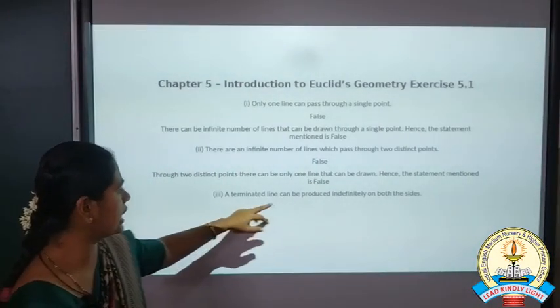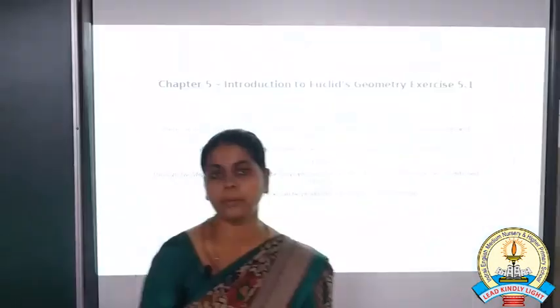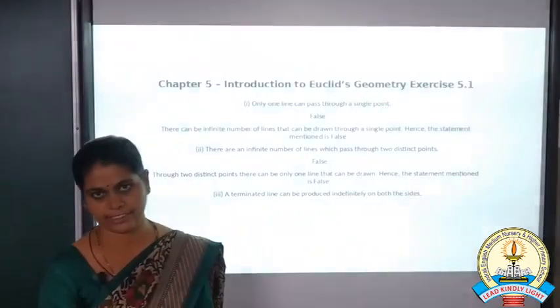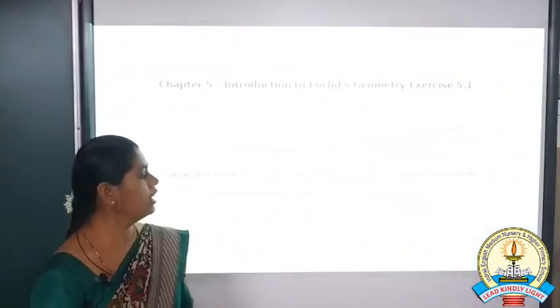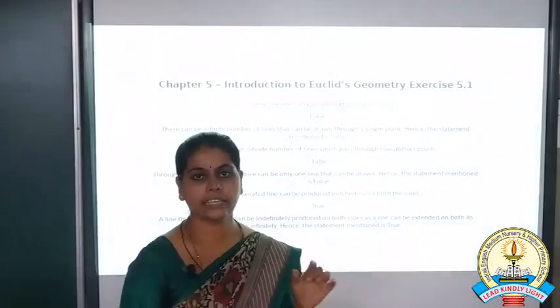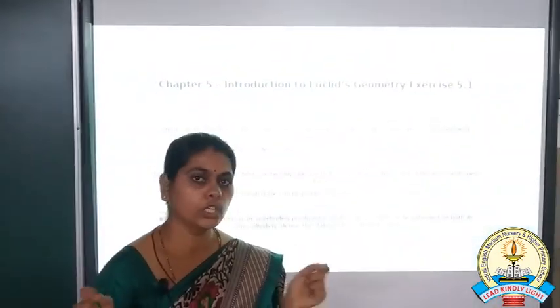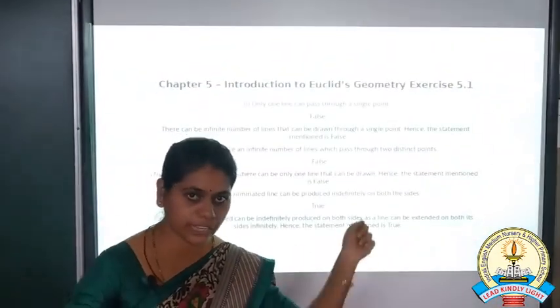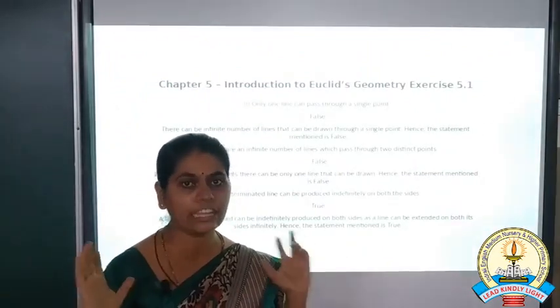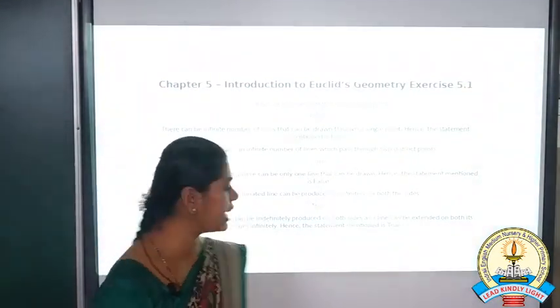Now the third statement: a terminated line can be produced indefinitely on both sides. This statement is true, because a terminated line means there should be two end points. You can extend these end points indefinitely and you can make the line a straight line.